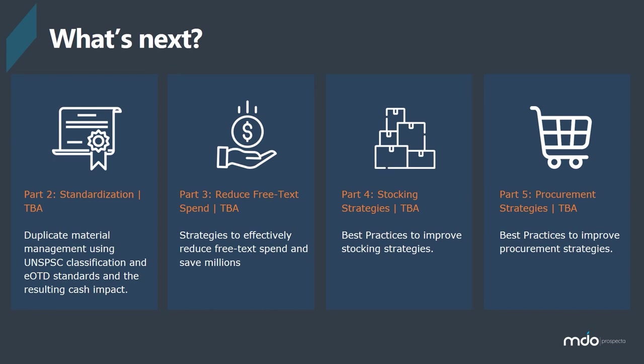We haven't set the dates for the next webinar yet, but part two is around standardization. Part three is the reduction of free text spend. And as the last question showed, we'll talk a lot around stocking strategies — how much should you stock, where should you stock it, when should you stock it — as that's very much cash-focused. Procurement talks a lot around category management and negotiating better prices, but there's a whole world of distinction between procurement — which is negotiation and more commercial — and purchasing, which is transactional. A lot more work needs to be done in the purchasing space to make it more automated and drive towards more perfect orders.